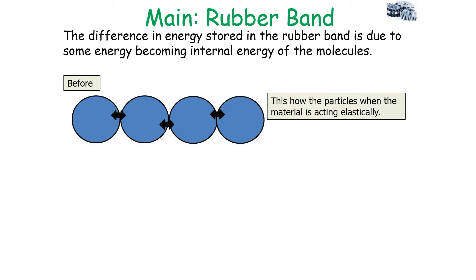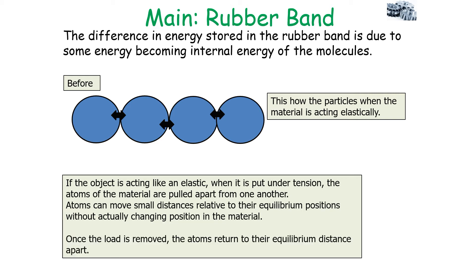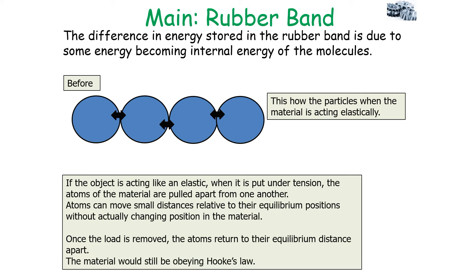The difference in energy stored in the rubber band is due to some energy becoming internal energy of the molecules. Before loading and unloading, the particles are acting in a material which is elastic. If the object is acting like an elastic and is put under tension, the atoms of the material are moved ever so slightly apart from each other. Atoms can move small distances relative to their equilibrium positions without actually changing position; once the load is removed, the atoms return to their original equilibrium distance apart, so the material still obeys Hooke's Law.